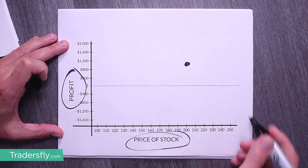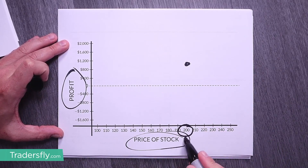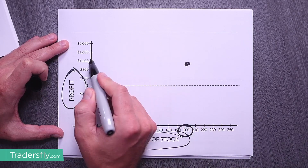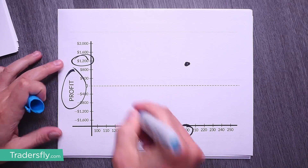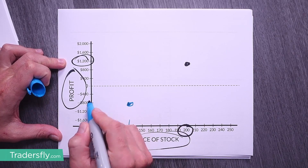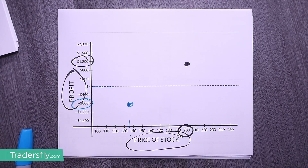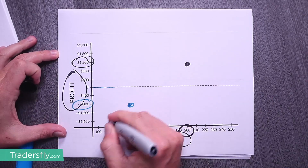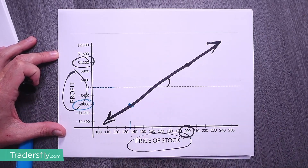So if I pick a point, any point right here, let's pick that point. Well, what does this mean? It means at the $200 price of the stock, I would be profitable $1,200. Let's pick another point. If the stock price was $135, I would be at a loss of $800. The zero line is right here. Now let's go ahead and connect these two points and make a straight line. This tells me the angle or steepness — it tells me how fast I'm making or losing money.